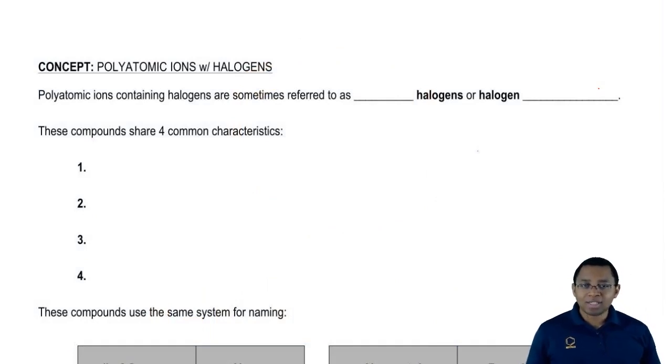Remember, the halogens are the elements in group 7a. Polyatomic ions that contain halogens are sometimes referred to as oxyhalogens or halogen oxyanions.